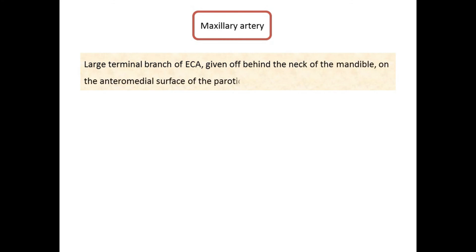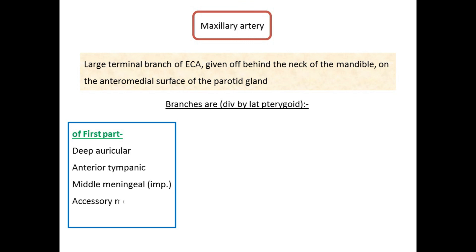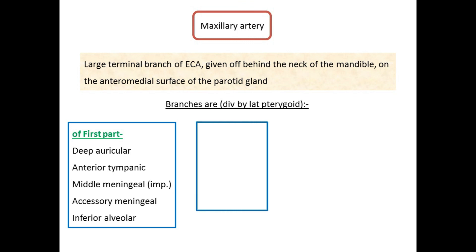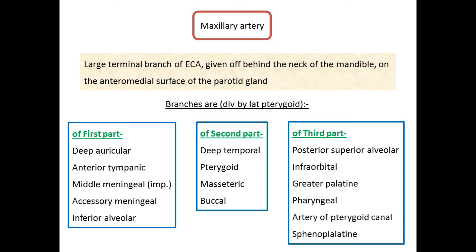The maxillary artery is the larger terminal branch of the external carotid artery. It begins behind the neck of the mandible under cover of the parotid gland and has a wide territory of distribution, divided into three parts by the lateral pterygoid. The branches of the first part are: deep auricular, anterior tympanic, middle meningeal, accessory meningeal, and inferior alveolar. The second part gives: deep temporal, pterygoid, masseteric, and buccal branches. The third part gives: posterior superior alveolar, infraorbital, greater palatine, pharyngeal, artery of pterygoid canal, and sphenopalatine as the terminal branch. As this is an important and descriptive branch, it will be discussed in a separate presentation.